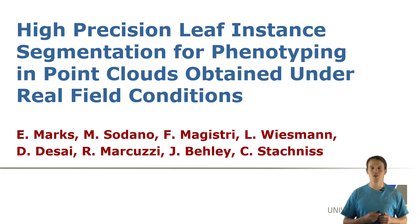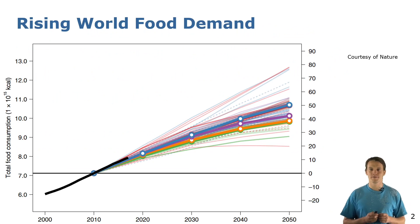Hello, I'm Elias and I'm here to present our work on high precision instance segmentation to detect individual leaves in real field point clouds. The colorful lines you see here in the plot represent the expected food demand until 2050 according to different predictive models.